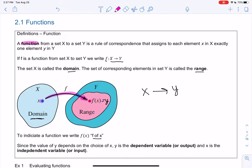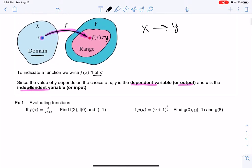And then y is called the dependent or output. And then x is the independent or the input. So basically, we're inputting this thing into a machine, and then we're outputting y. So we'll talk about that as we evaluate functions.